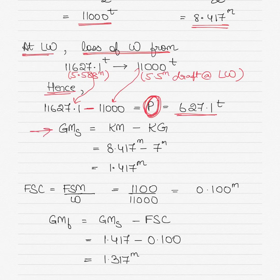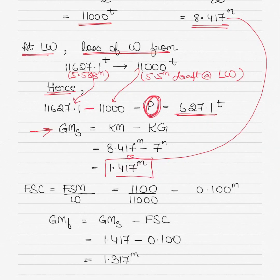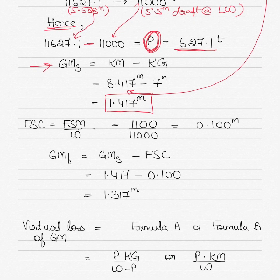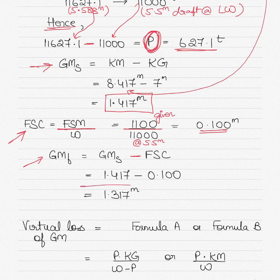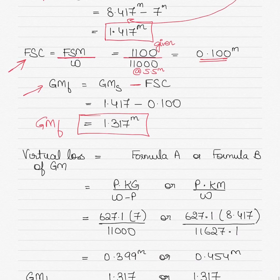GM solid equals KM minus KG. KM is 8.417 from the tables at 5.5 meters, and KG is given in the question, yielding a GM solid of 1.417 meters. The free surface correction is the free surface moment divided by the new displacement of 11000 tonnes, giving 0.100. Therefore, GM fluid equals GM solid minus the free surface correction: 1.417 minus 0.100 equals 1.317 meters.